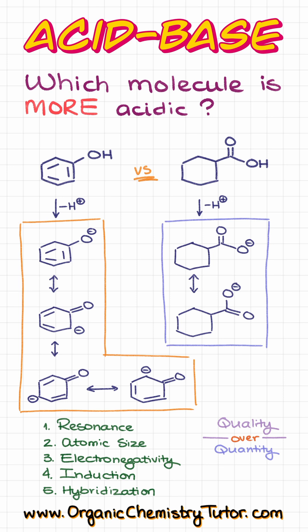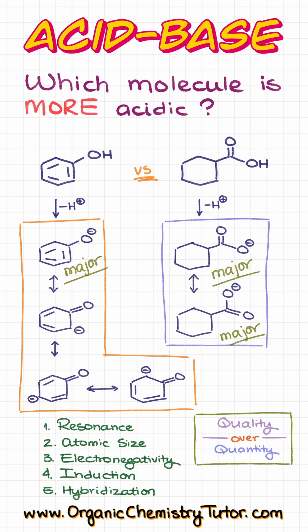And here is something that a lot of students forget: whenever we are analyzing our resonance structures, we need to pay attention to the quality of those resonance structures, and not just the number. By quality, I mean major versus minor contributors. In the case on the left, we only have one major contributor, while the molecule on the right has two equally major contributors.